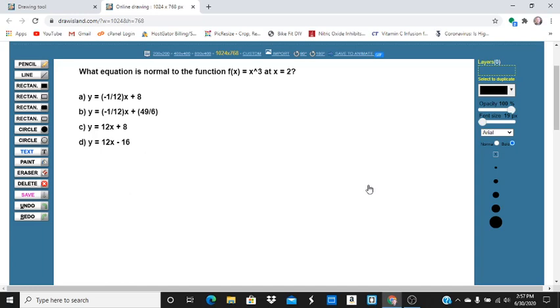Okay, so it's got to go through the point, which is going to be... the point is 2, and then 2 cubed is your y coordinate, so that's going to go through 2, 8, and it's got to be perpendicular to that tangent line.